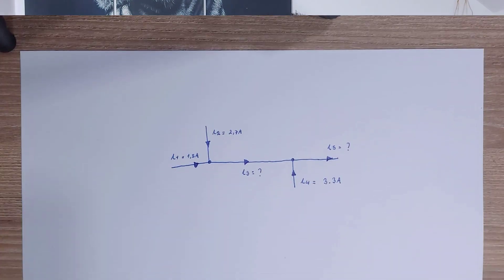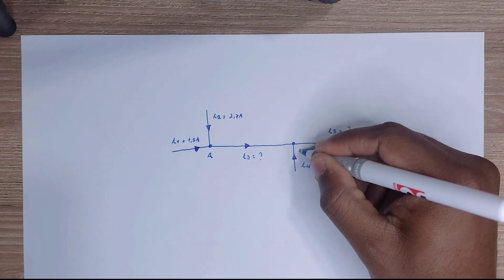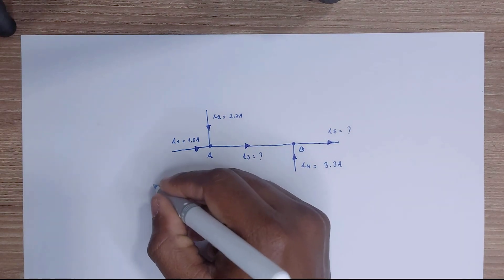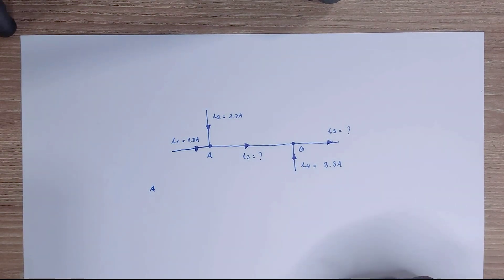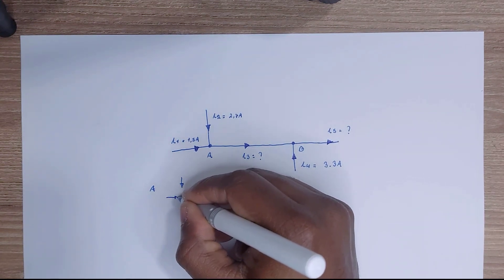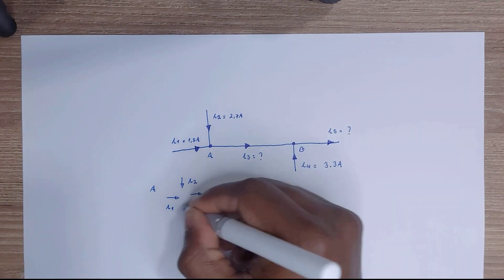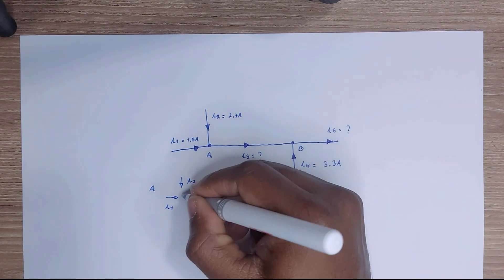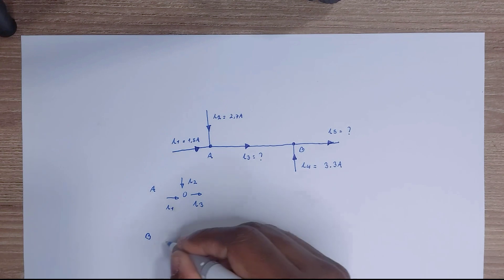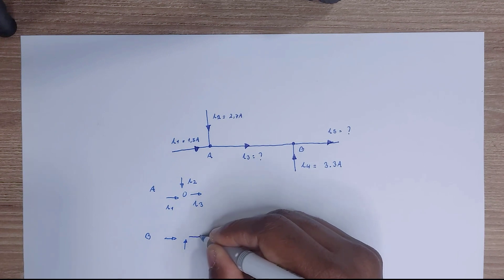Let's see an example. We have this circuit. First, we're going to identify how many nodes we have — we have two nodes: node A and node B. For node A, we have current 1 and current 2 going inwards the node, and we have current 3 going outwards. For node B, we have current 4 going inwards, current 3 going inwards, and current 5 going outwards.